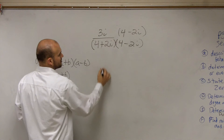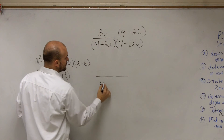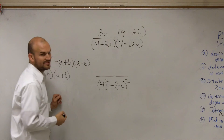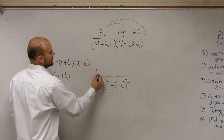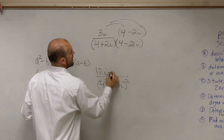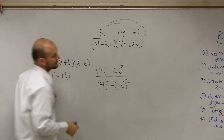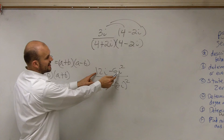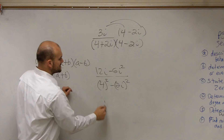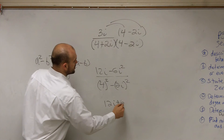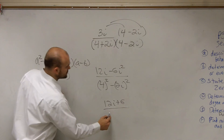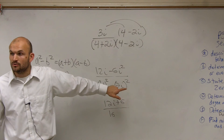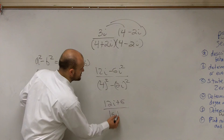On the denominator, I'm going to have 4 squared minus 2i squared. On the top, I need to make sure I apply the distributive property, which gives 12i minus 6i squared. Now, i squared is negative 1, so negative 1 times negative 6 is positive 6 — giving 12i plus 6 on the numerator. 4 squared is 16. 2i squared is going to be 4i squared, which is negative 4. Minus negative 4 is plus 4.